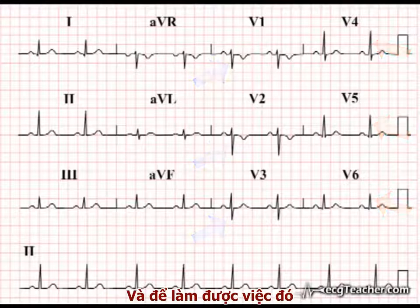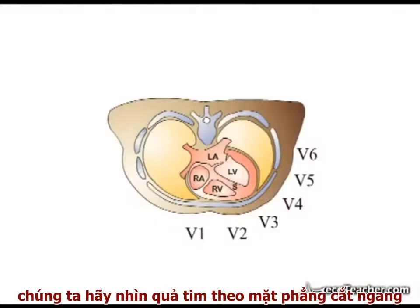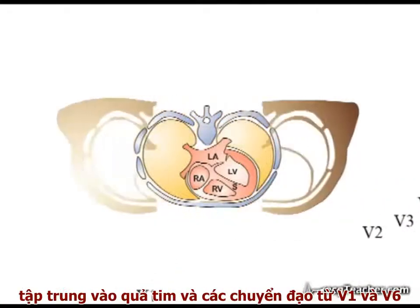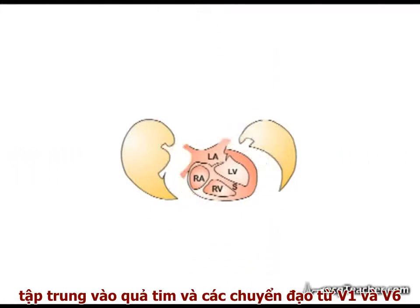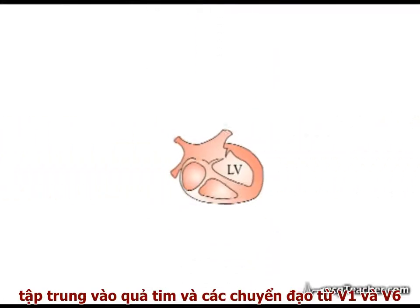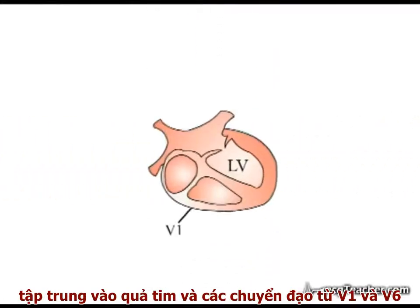To do so, we will look at the heart in horizontal section, focusing on events in leads V1 and V6.